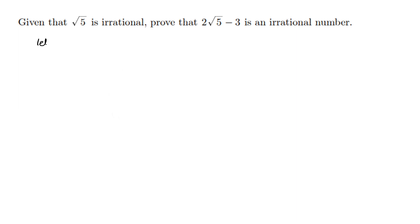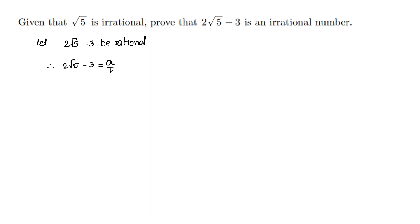So, let 2 root 5 minus 3 be rational. We know that every rational number can be expressed in the form of A by B. So therefore, 2 root 5 minus 3 is equal to A by B.